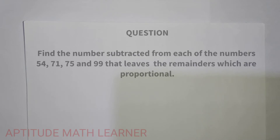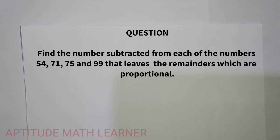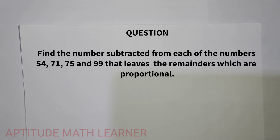Welcome! Today we have an interesting question. Please subscribe to our channel, like it, and share it. The question is: find the number subtracted from each of the numbers 54, 71, 75, and 99 that leaves remainders which are proportional. For this type of question, watch the video completely.